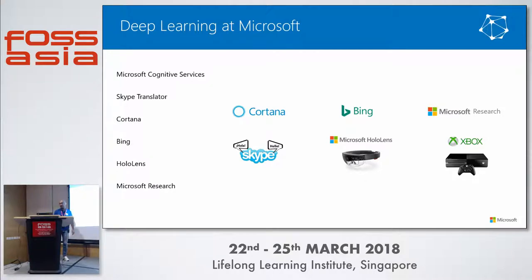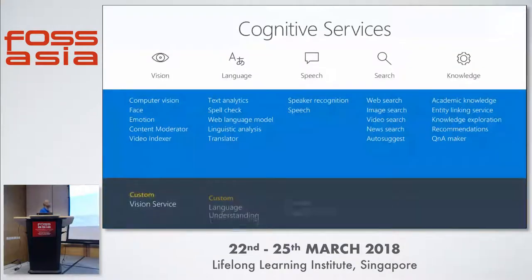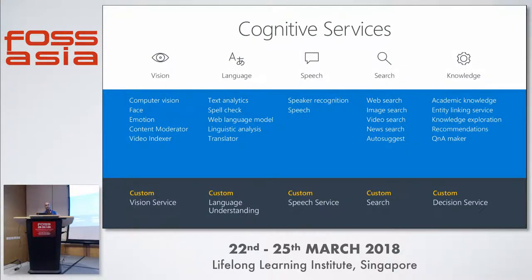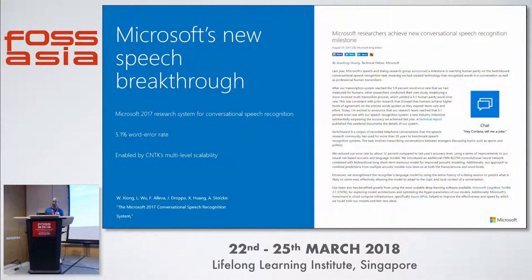Within Microsoft itself there's deep learning everywhere — from Skype to Cortana, Bing, HoloLens, and even Xbox. There are also cognitive services: pre-built deep learning models available as RESTful APIs for vision, speech, and language, some customizable using transfer learning. Practically everything here is built using CNTK, the Cognitive Toolkit — we have these in production.